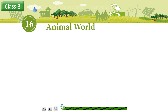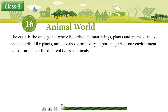Animal World. The Earth is the only planet where life exists. Human beings, plants and animals all live on the Earth. Like plants, animals also form a very important part of our environment. Let us learn about the different types of animals.